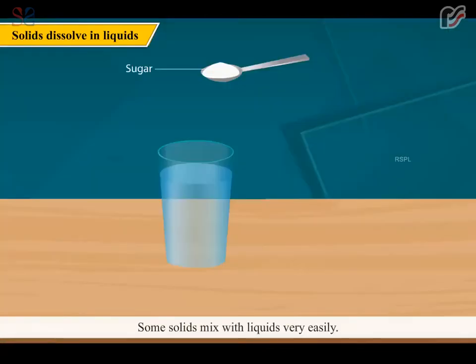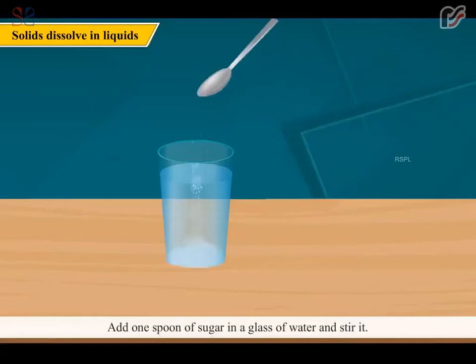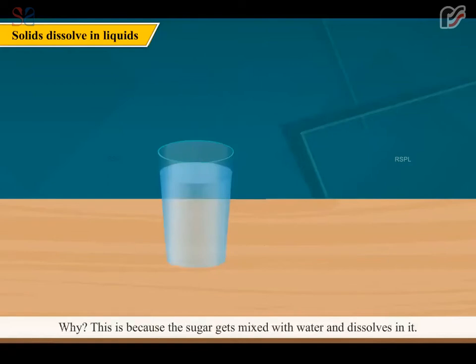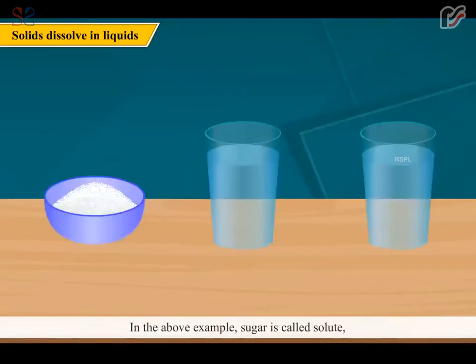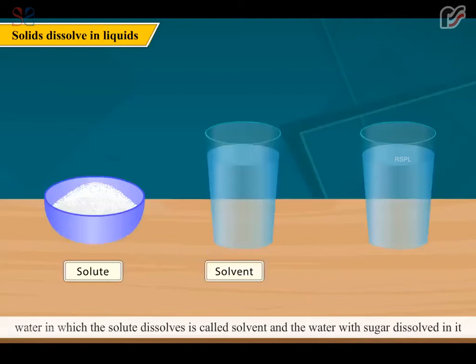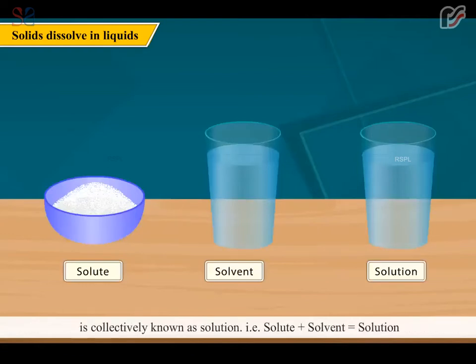Some solids mix with liquids very easily. Add one spoon of sugar in a glass of water and stir it. What happens to the sugar? Nothing can be seen in water. Now taste the water. It has sweet taste. Why? This is because the sugar gets mixed with water and dissolves in it. In the above example, sugar is called solute. Water in which the solute dissolves is called solvent. And the water with sugar dissolved in it is collectively known as solution. That is, solute plus solvent is equal to solution. The sugar occupies the space present between the water molecules, so you cannot find the difference in water level.